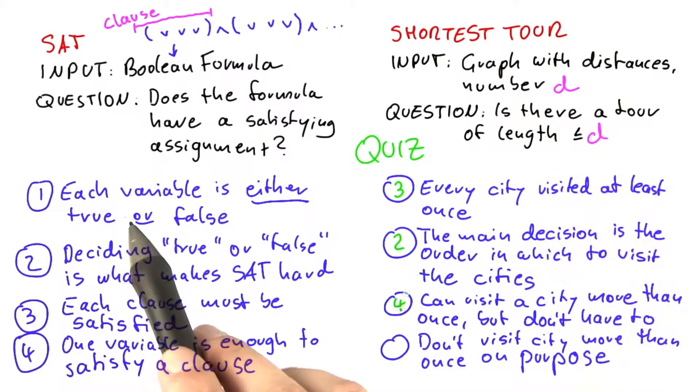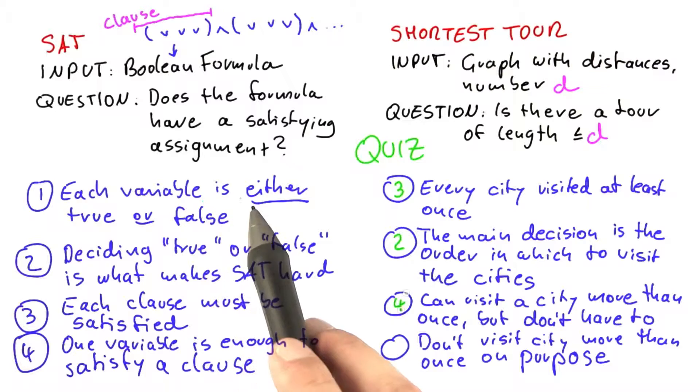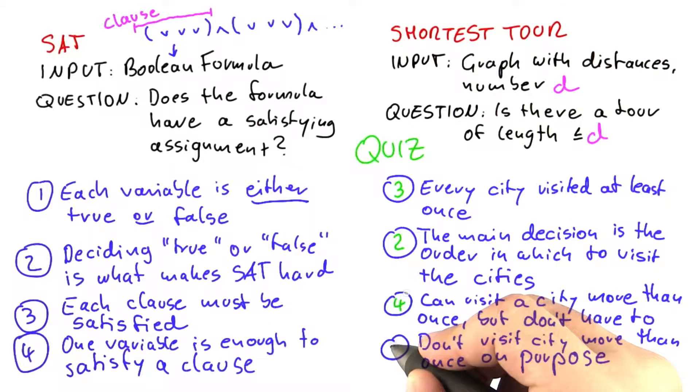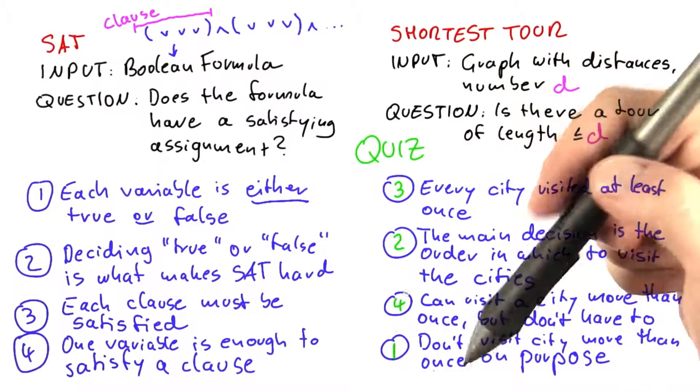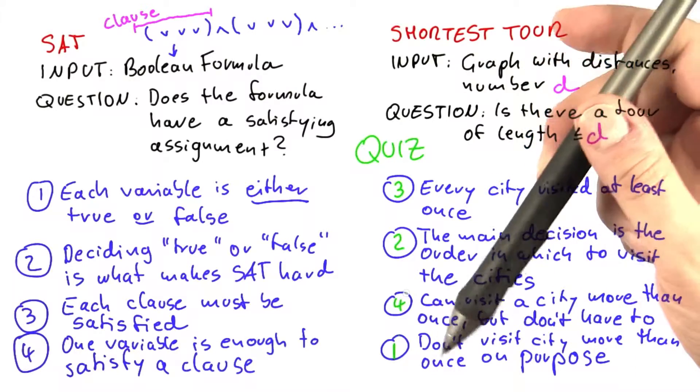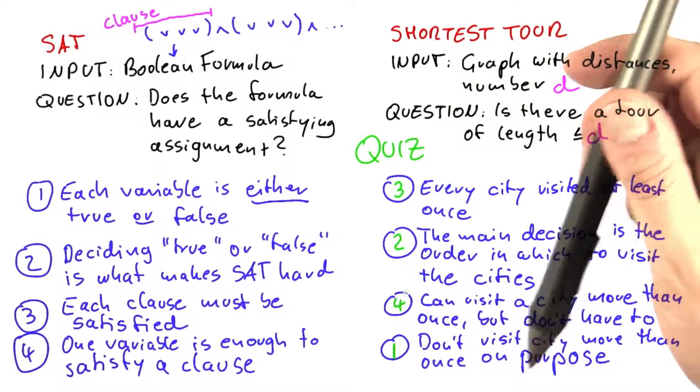One single variable is enough. And then finally, saying that each variable is either true or false. I think, and this is probably the hardest one to figure out, that that is actually quite closely related to saying that you don't visit a city more than once on purpose.